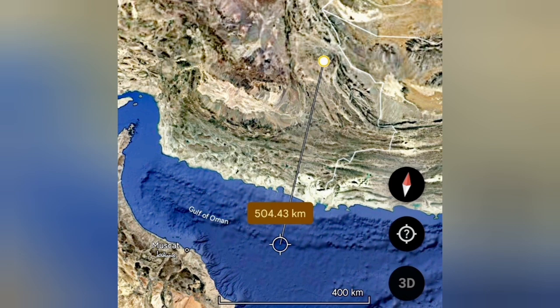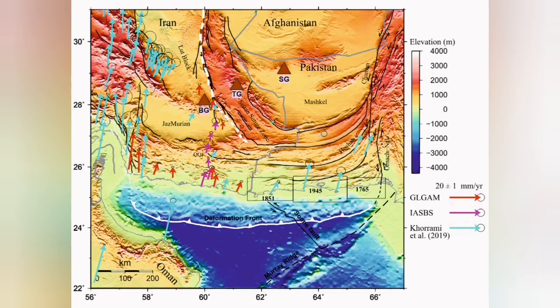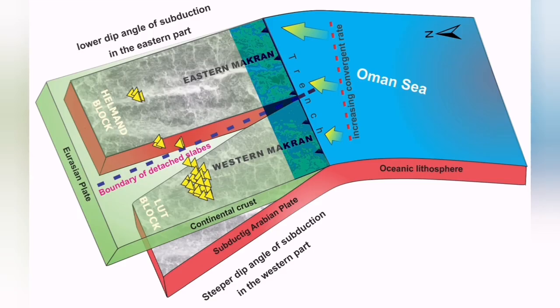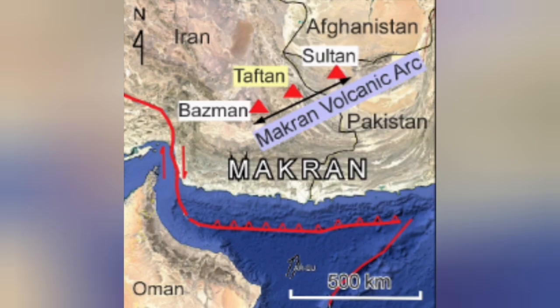We now know why this has happened. Seismic measurements have shown two different slopes for the descending oceanic plate, and we think there is a detachment of this oceanic plate creating this phenomenon. So in the Iranian part, the volcanoes are closer to the trench — this is a unique location, because in Eurasia we don't have many subduction zones of this kind.